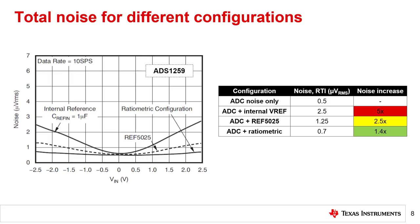This plot taken directly from the ADS-1259 data sheet shows the relative reference noise plots for the different reference configurations: internal, external using REF5025, and ratiometric.